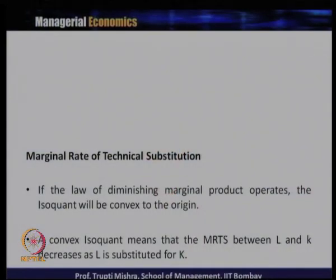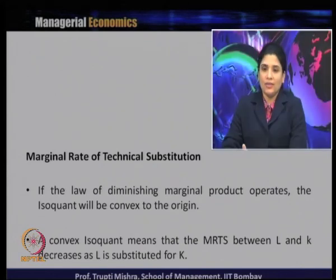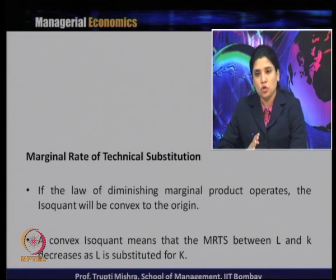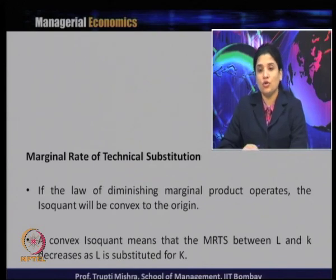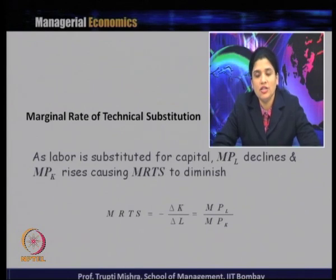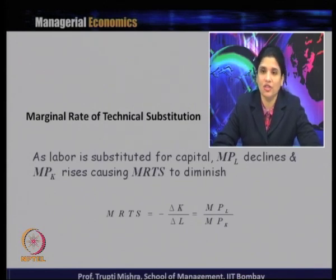The marginal rate of technical substitution can also be expressed as the ratio of two marginal products — that is the ratio of marginal product of labour to marginal product of capital. As labour is substituted for capital, the marginal product of labour declines and marginal product of capital increases, causing the MRTS to diminish. So MRTS equals the change in K with respect to change in L, or equivalently the ratio of MPL to MPK.